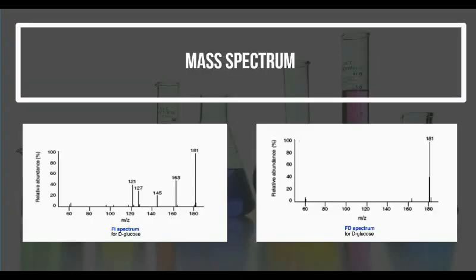From these two diagrams, we can see the sample of using D-glucose to show the difference in fragmentation between field ionization and field desorption. It can be observed in the field ionization spectrum that there are five fragmentations of different sizes while in the field desorption spectrum only one visible fragmentation was observed.